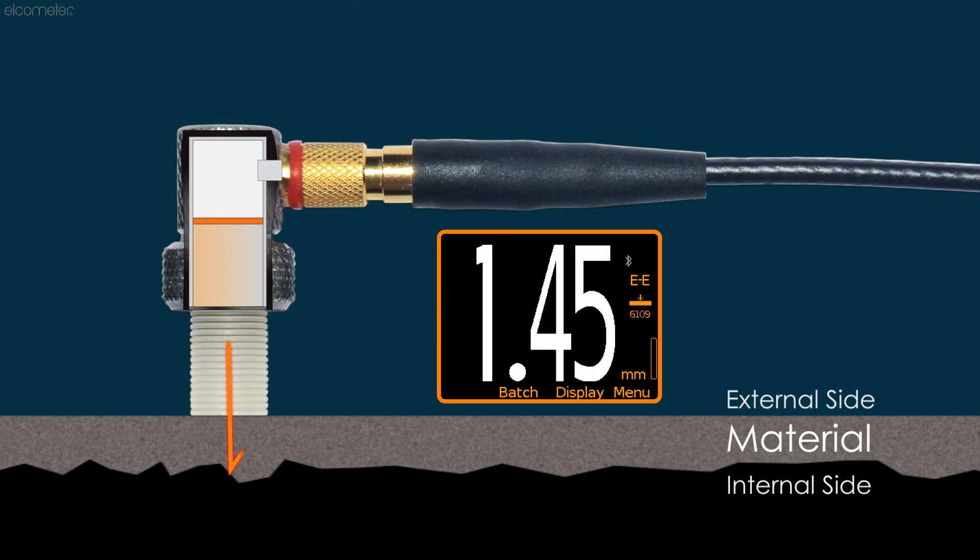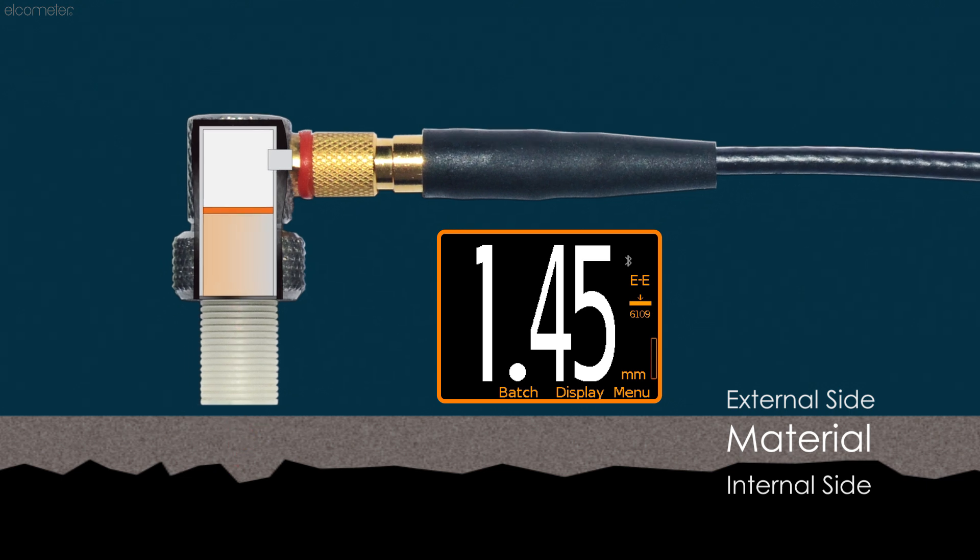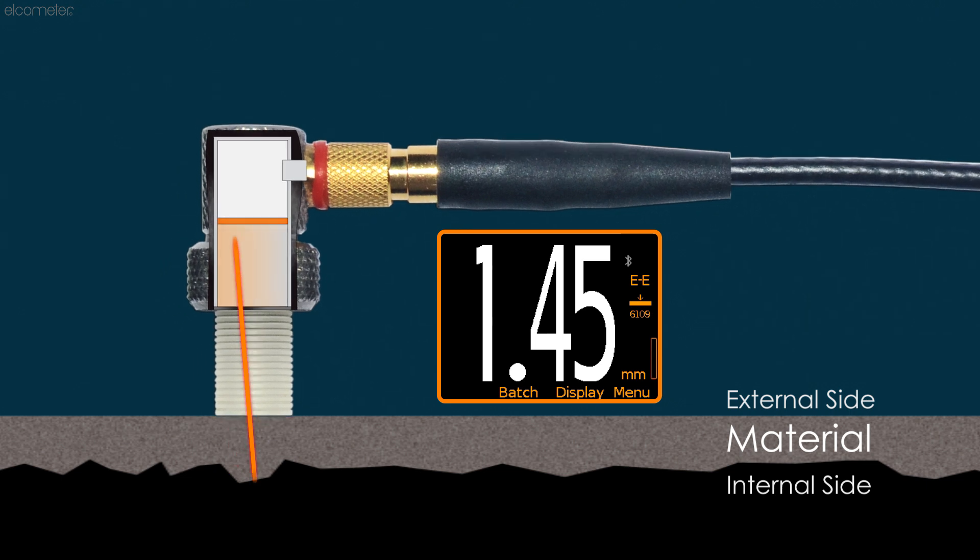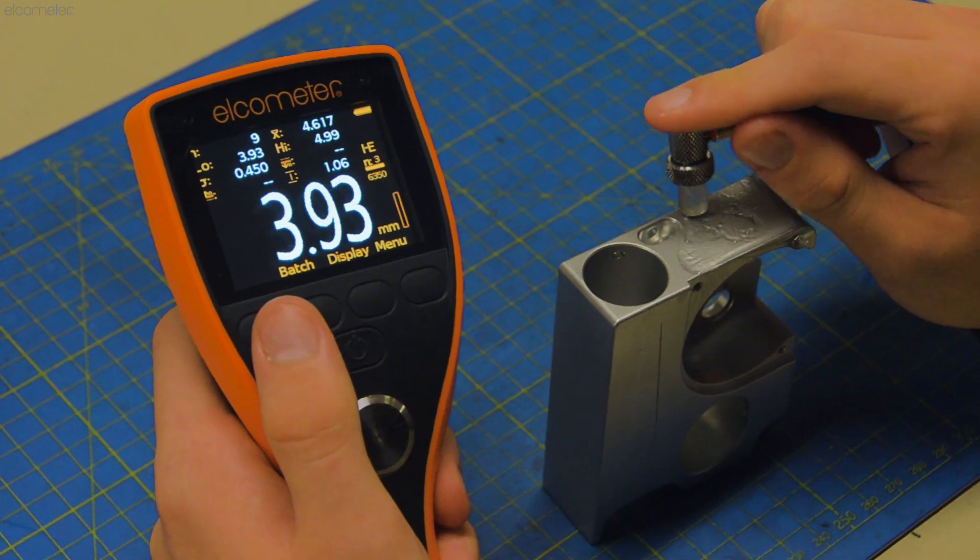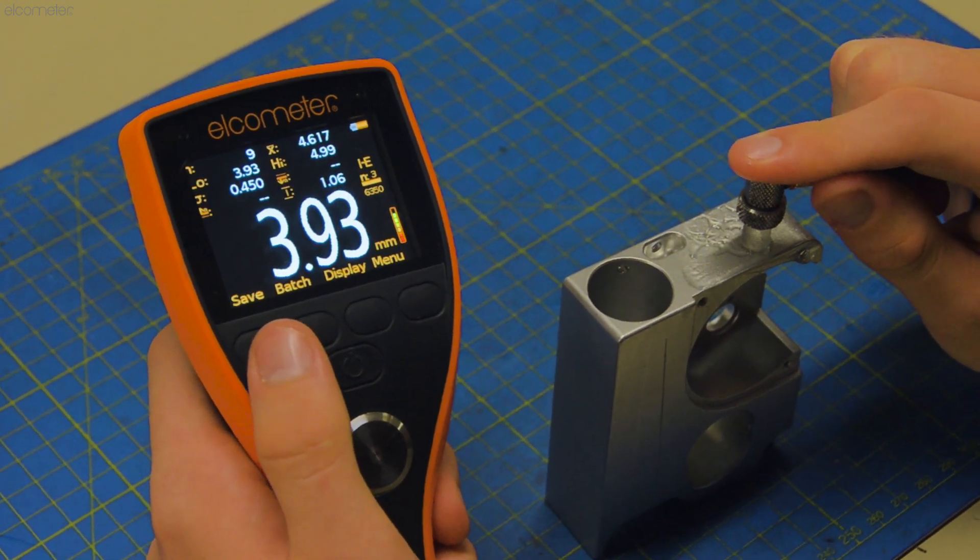When measuring on materials that deflect or absorb the ultrasonic signal, the Elcometer PTG gauges only allow you to save a measurement if the signal strength indicator is in the green, avoiding false or incorrect readings.